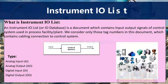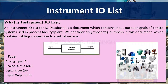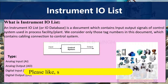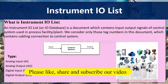What is an Instrument IO List? An Instrument IO List, or IO database, is a document which contains input-output signals of control systems used in a process facility or plant. We consider only those tag numbers in this document which have cabling connections to the control systems. Generally, we do not consider items without cabling connections, such as wireless signals.